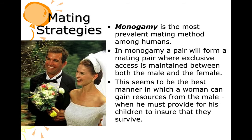Monogamy is the most prevalent mating method among humans. A pair forms an exclusive mating bond where exclusive access is maintained between both the male and the female. This seems to be the best way for a woman to gain resources from the male when he must provide for his children to ensure they survive.